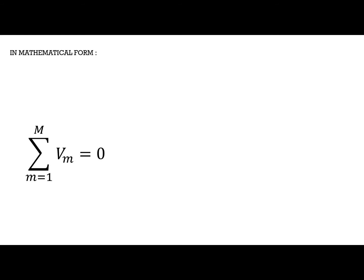This is the mathematical form on how to calculate the total voltages around a loop and must be equal to zero. M is the number of voltages in the loop. Vm is the Mth voltage.